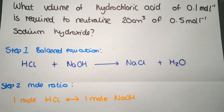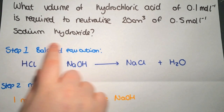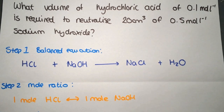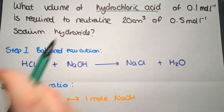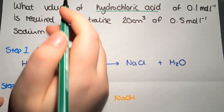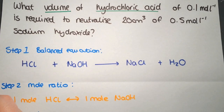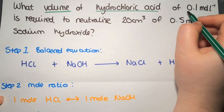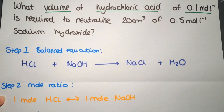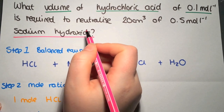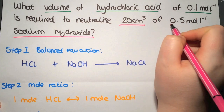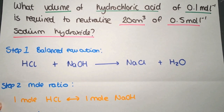The next thing you need to do is have a look at the information you've been given and allocate different colours for the two different species. For hydrochloric acid, I'm going to underline everything about it in green. We're being asked what volume of hydrochloric acid would be required to neutralise, and we've got a concentration of hydrochloric acid. For sodium hydroxide, we've got a volume and a concentration.